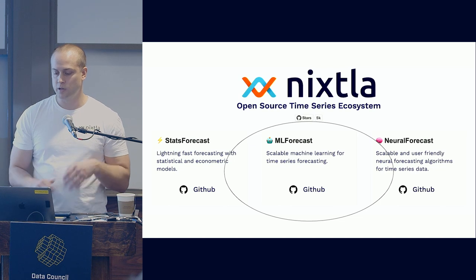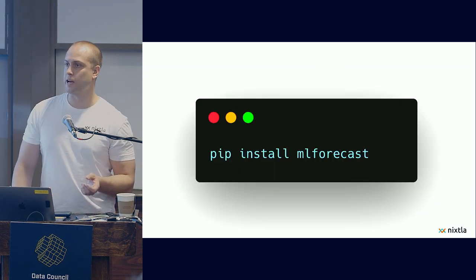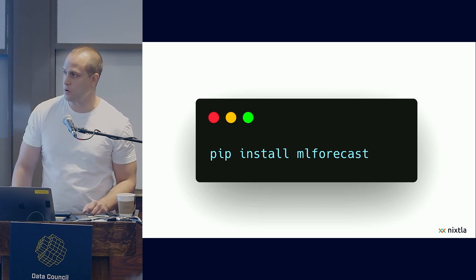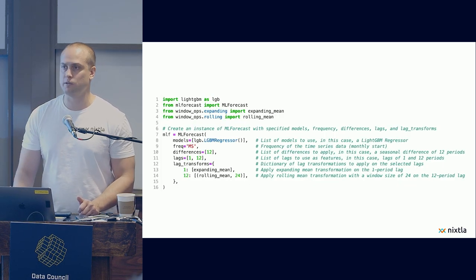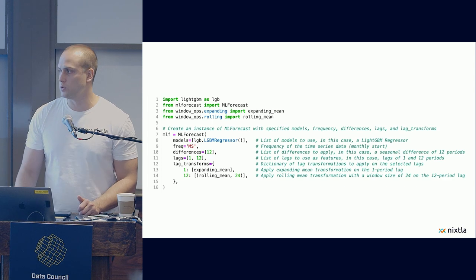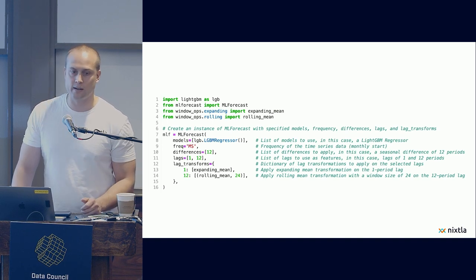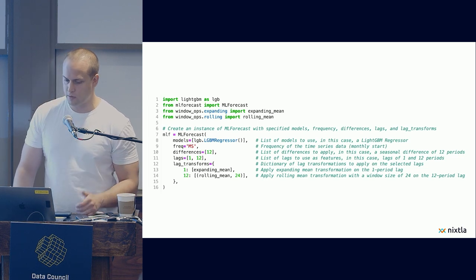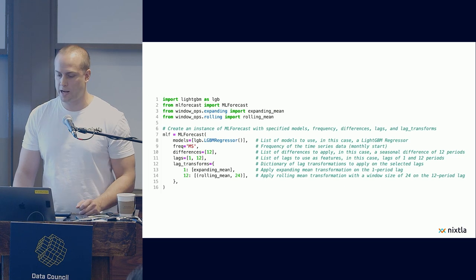So today I'm going to show you how to use ML Forecast, which is the library that we created for machine learning models. We also have statistical and econometric models and deep learning models. And in less than 20 lines of code, and using this machine that you see here, we were able to forecast the 555 series in less than 15 seconds, in this case, fitting a classical light GBM model.